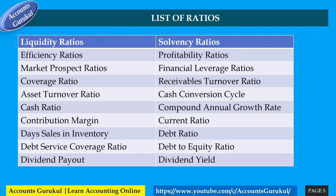Now, what are all the ratios in the list? We have a large number of ratios. These include: liquidity ratio, quick ratio, cash ratio, efficiency ratio, market prospect ratio, coverage ratio, asset turnover ratio, cash ratio, contribution margin ratio, days sales in inventory, debt service ratio, dividend payout ratio, solvency ratio, profitability ratio, financing leverage ratio, receivable turnover ratio, cash conversion cycle, compound annual growth rate, current ratio, debt ratio, and debt to equity ratio.